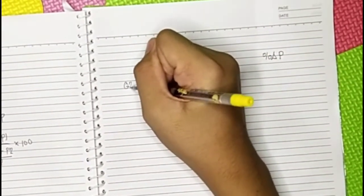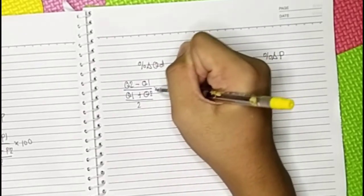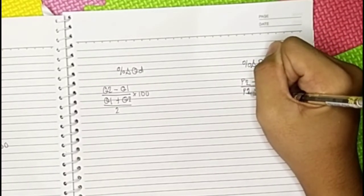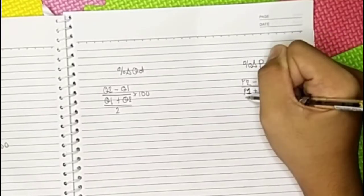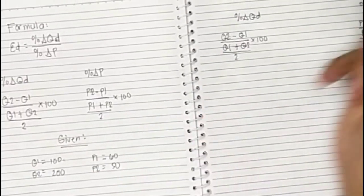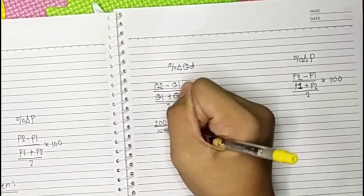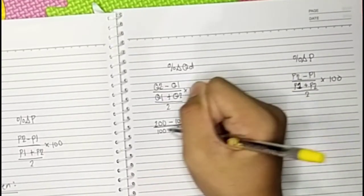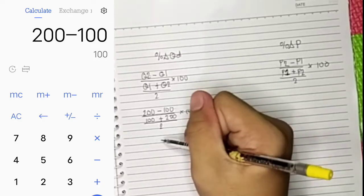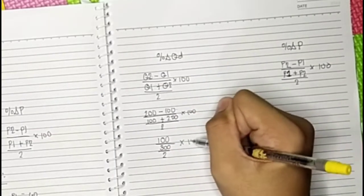Write Q2 minus Q1 over Q1 plus Q2 divided by 2 times 100. Then P2 minus P1 over P1 plus P2 divided by 2 times 100. After that, simplify the given values: 200 minus 100, over 100 plus 200 divided by 2, times 100. Next, subtract the numerator: 200 minus 100 equals 100. And 100 plus 200 equals 300, divided by 2, times 100.